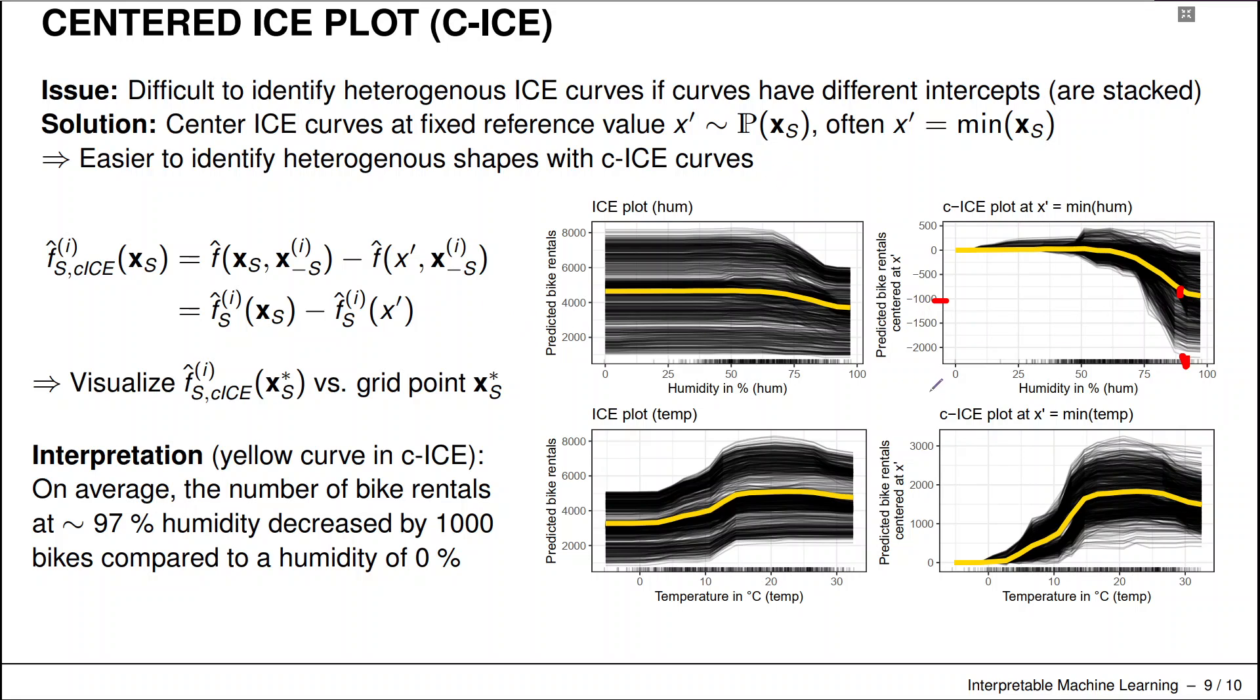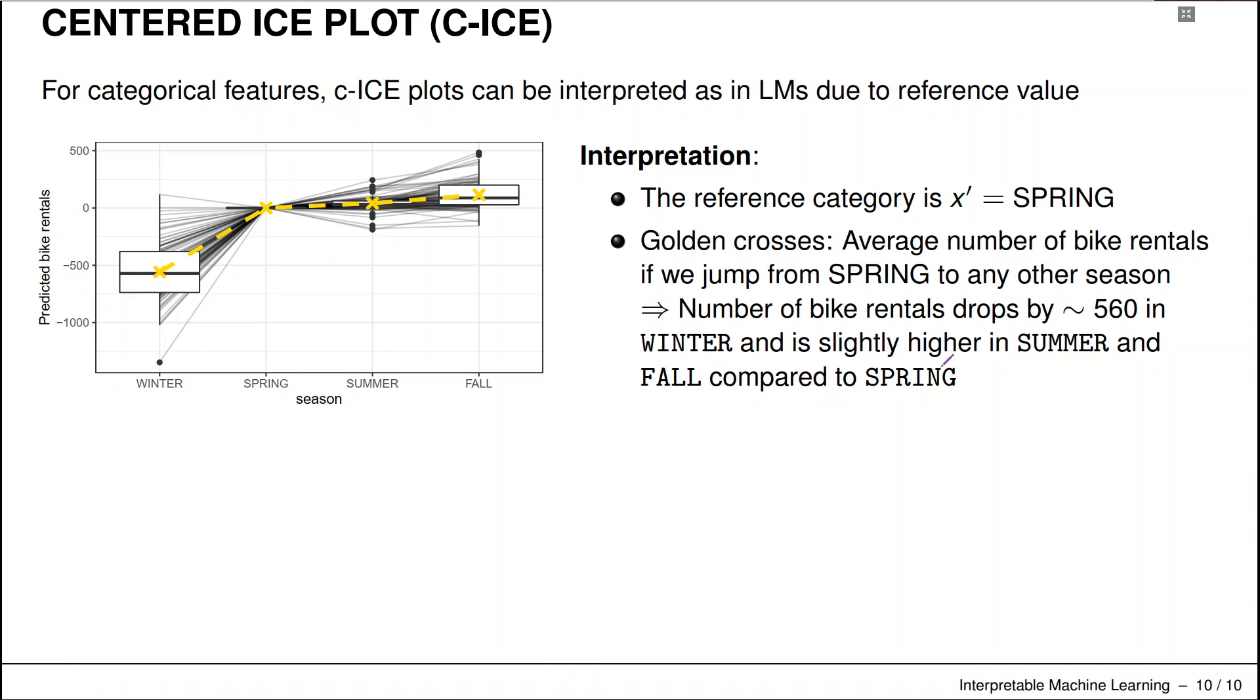So this is now a relative change that happens with respect to that reference value in the ICE plot. And you can do the same for categorical features. And if we do this for categorical features, there's also a nice interpretation and connection to linear models where we have these reference values going on, usually also for categorical features.